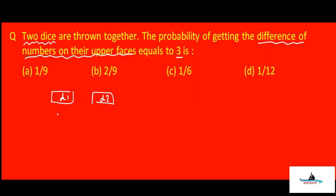On dice one we can get six, and for the difference to be three, dice two should show three — since six minus three is three. Similarly, if dice one shows five, dice two should show two, because five minus two is three. And if dice one shows four, dice two should show one, because four minus one is three.